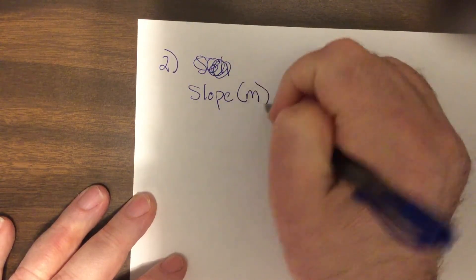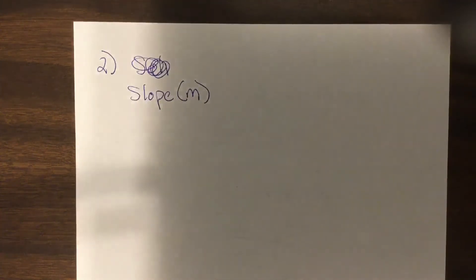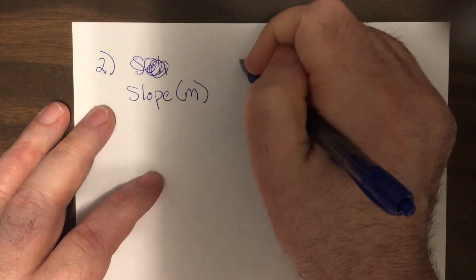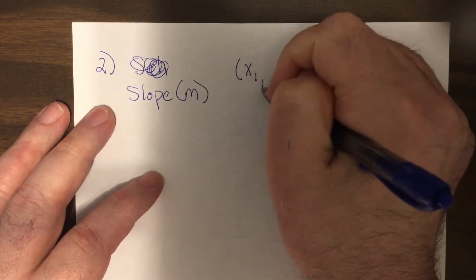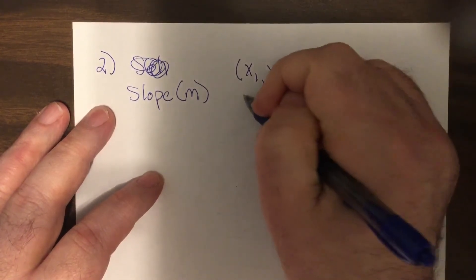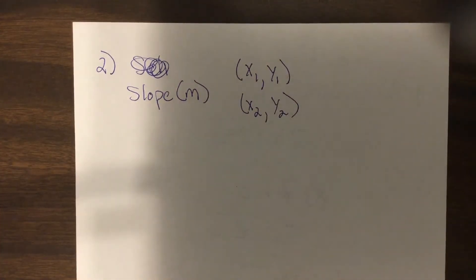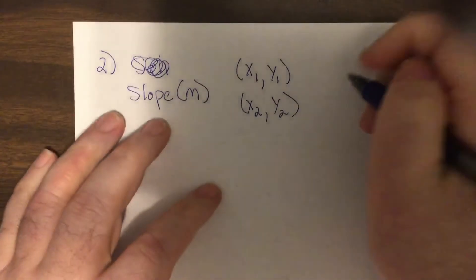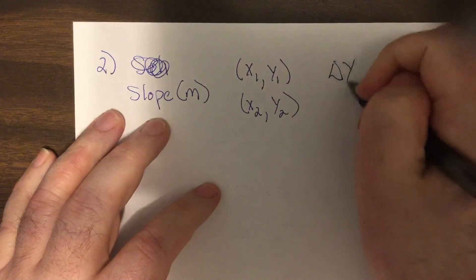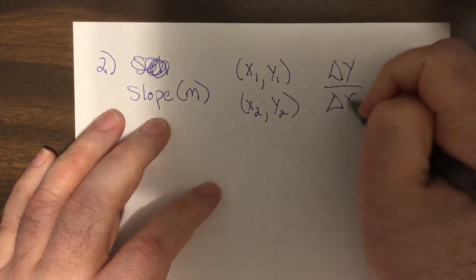We use M for the letter for slope. I'm talking about given two ordered pairs, what would the slope be? Remember, slope is always change in y over change in x.